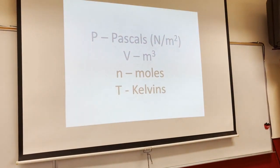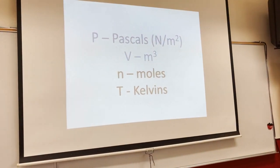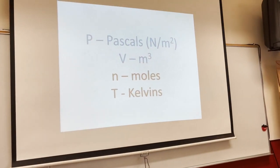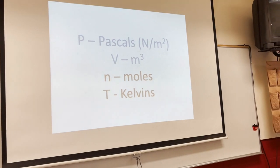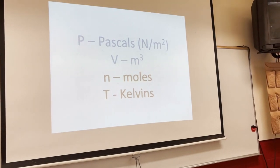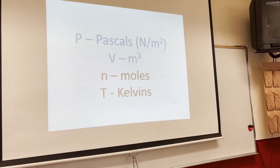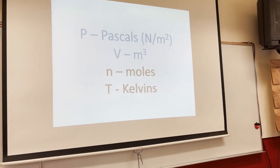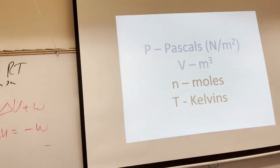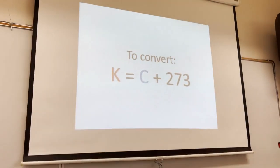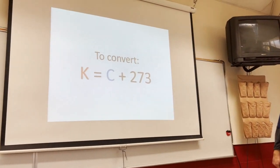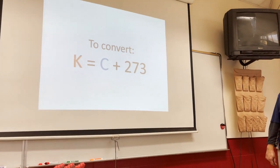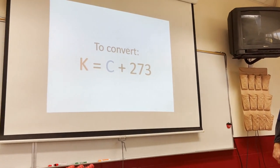For the ideal gas law, you have to use Pascals for pressure — a Pascal is Newtons per square meter. Volume has to be in cubic meters. And you need moles and Kelvin; that's how you convert from Celsius to Kelvin.